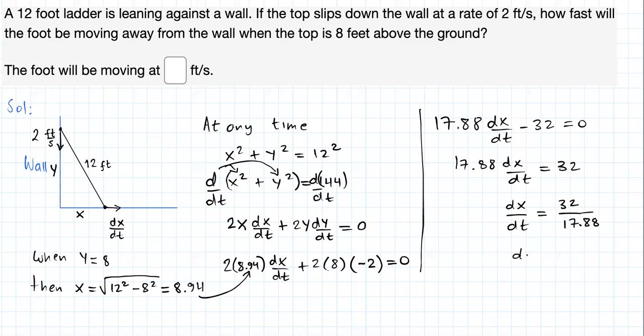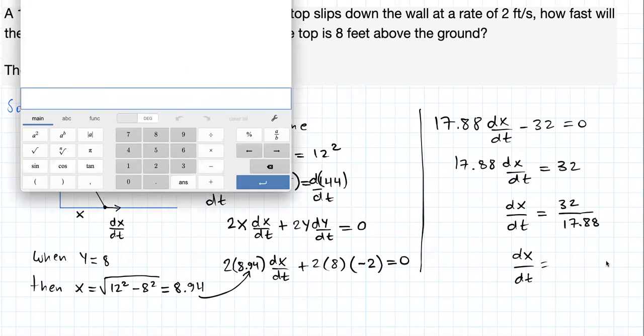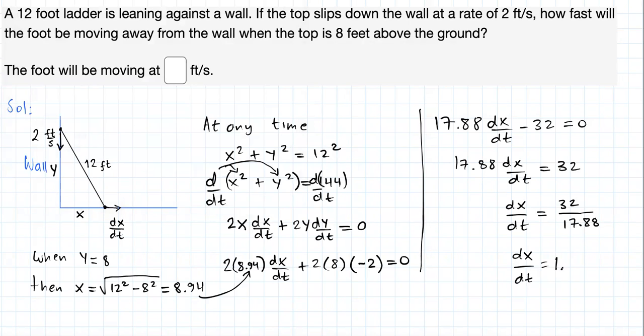Let's compute this in our calculator. So we have 32 divided by 17.88. That is 1.789. I'm going to round it to two decimal places. So this should be approximately equal to 1.79. And in the end, feel free to attach the units, right?